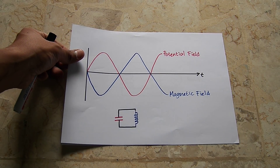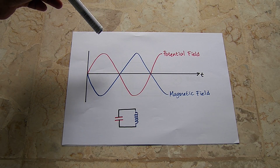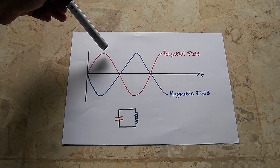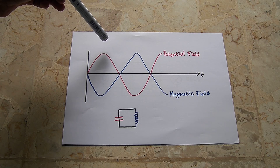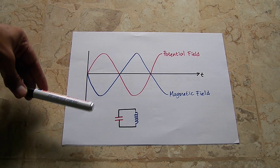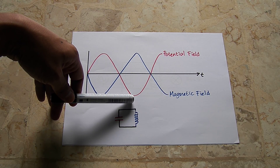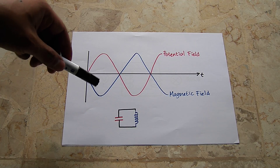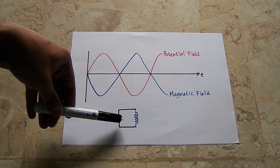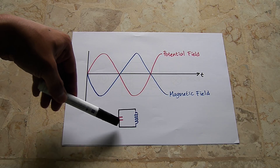Here is the explanation. The red line is the potential field and the blue line is the magnetic field. We will not see potential field and magnetic field at the same time. If we have a strong potential field, we will get a low magnetic field. If we have a strong magnetic field, we will get a low potential field. So the potential field will be concentrated here, and at that time there is no magnetic field here. And if we have a magnetic field here, we will have no potential field here.